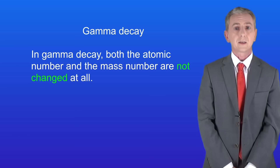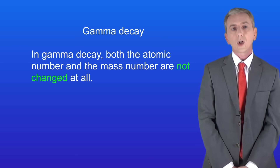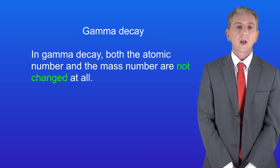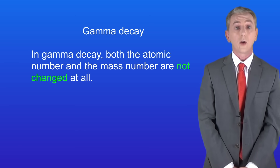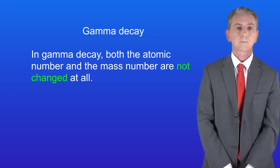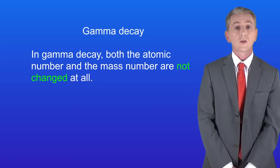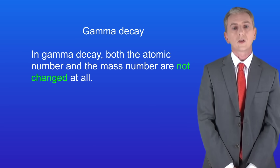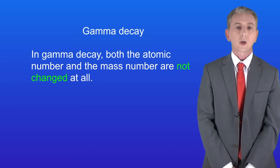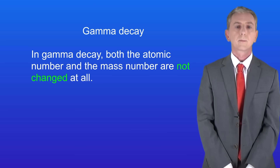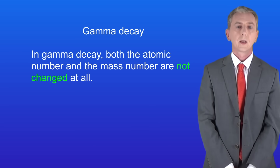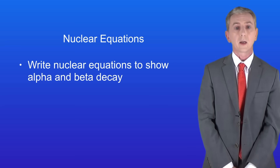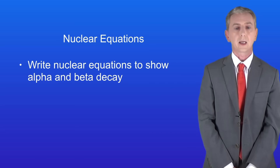Now we've looked at alpha and beta decay, but what about gamma decay? In gamma decay both the atomic number and the mass number are not changed at all. You'll find plenty of questions on nuclear equations in my revision workbook — you can get that by clicking on the link above. Hopefully now you should be able to write nuclear equations to show alpha and beta decay.